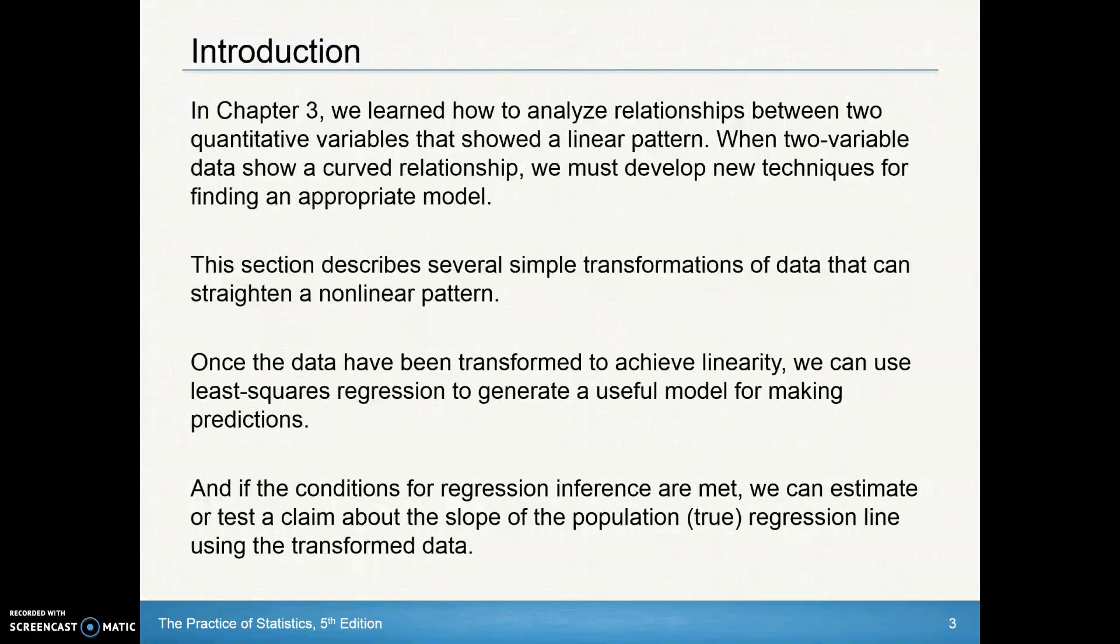So in chapter three, we learned how to analyze relationships between two quantitative variables that showed a linear pattern. When the two variable data showed a curve relationship, we must develop new techniques for finding an appropriate model. So in other words, when we take and plot our data, and if we were to see that the data does something like this, well, that's obviously not linear. What can I do to either the x or the y or both so I can linearize the data so that I can use linear regression techniques to analyze the data. And this section describes several simple transformations of data that can straighten a nonlinear pattern.